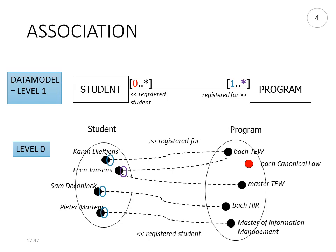We see that each student must be registered for a program, so each student has at least one link to a program. On the other hand, a student can be registered for many programs. Indeed, we see that Lene Janssens is registered both for the Bachelor theory and for the Master theory.